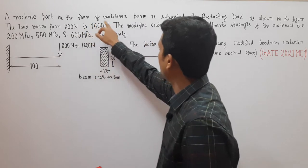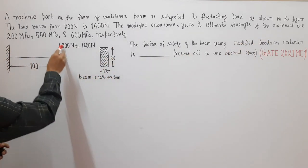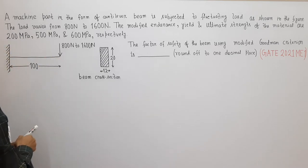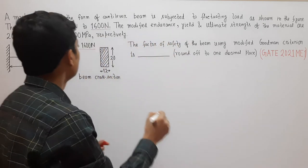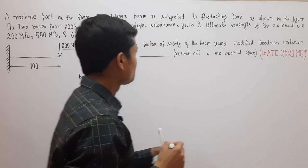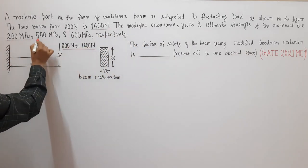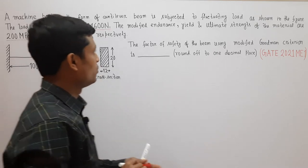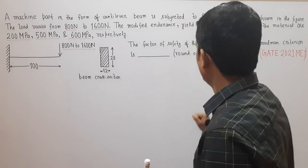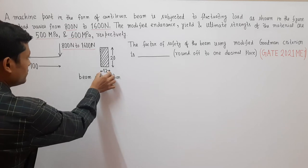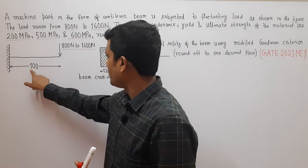A machine part in the form of a cantilever beam is subjected to fluctuating load as shown in the figure. The load varies from 800 Newton to 1600 Newton. The modified endurance, yield, and ultimate strength of the material are 200 MPa, 500 MPa, and 600 MPa respectively. The beam cross-section is rectangular with width 12 mm and height 20 mm, and the length of the beam is 100 mm.